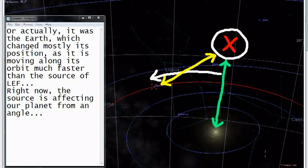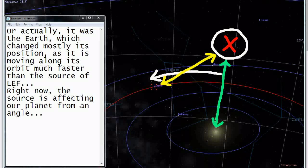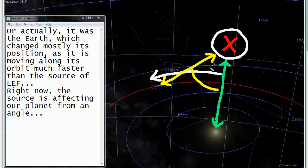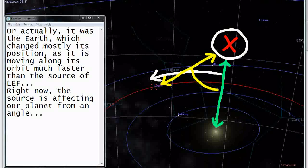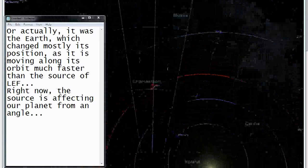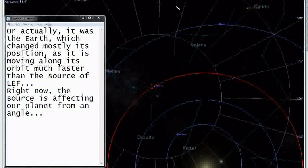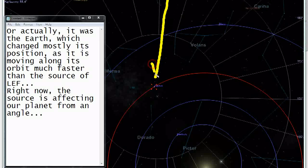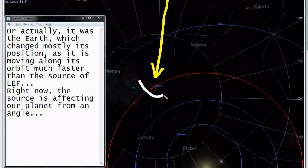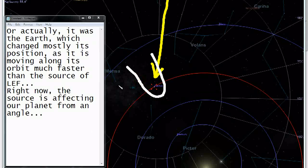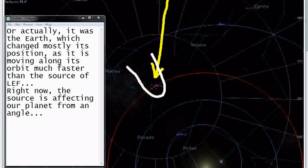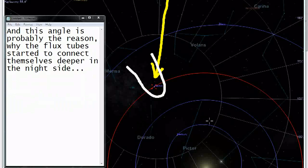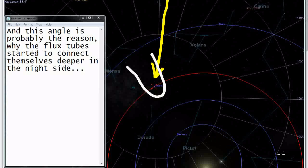Right now the source is affecting our planet from an angle. And this angle is probably the reason why the flux tubes started to connect themselves deeper in the night side.